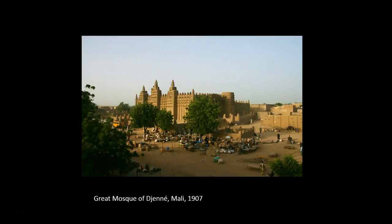Djenné was founded between 800 and 1250 CE and flourished as a great center of commerce, learning, and Islam, which had been practiced from the beginning of the 13th century. The great mosque became one of the most important buildings in town, primarily because it became a political symbol for local residents and for colonial powers like the French, who took control of Mali in 1892. Over the centuries, the Great Mosque has become the epicenter of religious and cultural life in Mali and the community of Djenné, and is also the site of a unique annual festival called the Crépissage de la Grande Mosquée — the plastering of the great mosque.